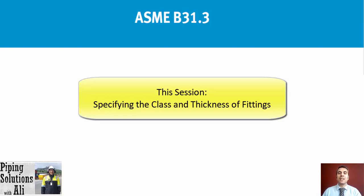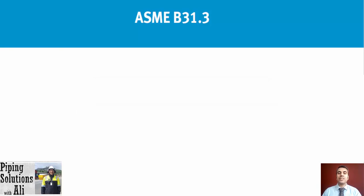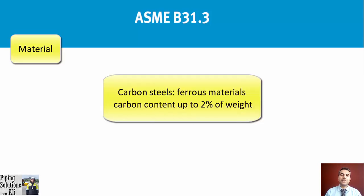Before that, let's talk a little about materials. Carbon steels are ferrous materials with carbon content up to two percent by weight. In addition to carbon (C), there are manganese (Mn), silicon (Si), phosphorus (P), sulfur (S), and other alloys that form its chemical composition. Carbon steels are used for manufacturing different piping components.